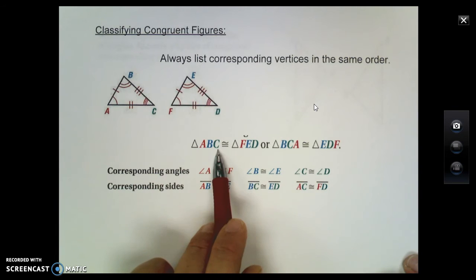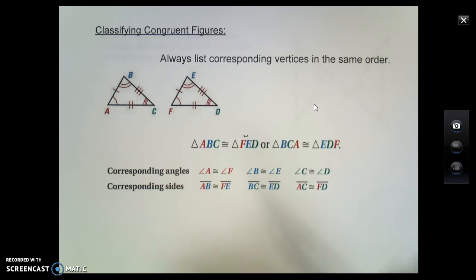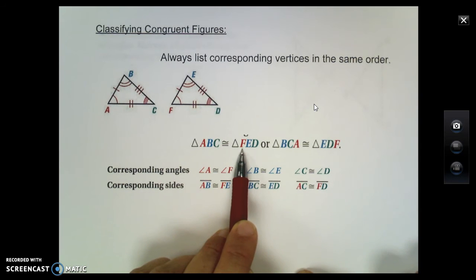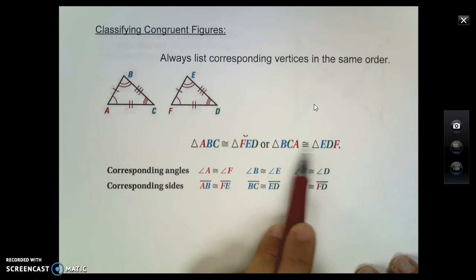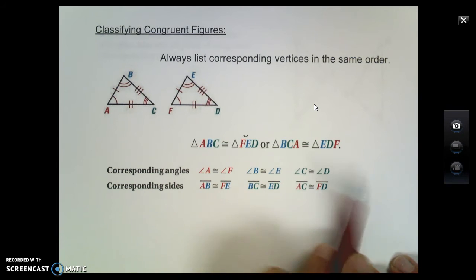Now these two examples that you see here that I have drawn on the paper are two great examples. However, there are many other examples that we can list out, so long as the corresponding parts are in the same place. Notice how the red A and the red F are both in the first position. And on this statement, the A and the F are in the last position. So it doesn't matter where they are as long as they correspond.